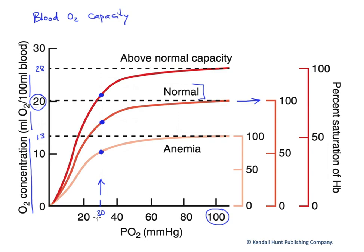If we bring it down to a PO2 of about 30 — assume a tissue that has a PO2 of about 30 — we're going to see some desaturation, some unloading of oxygen, and we would fall from 20 down to about 15 mils of O2 per 100 mils of blood.